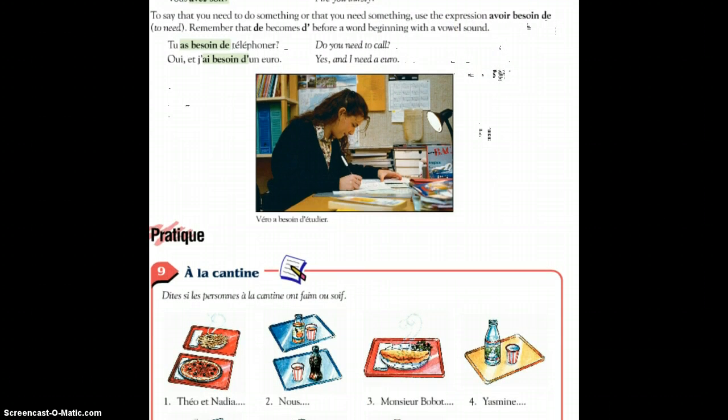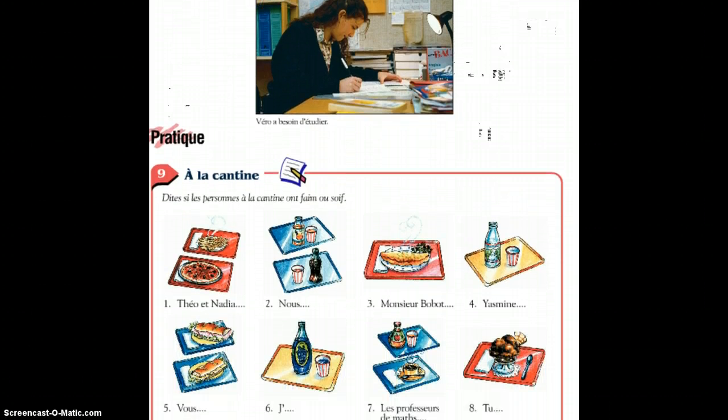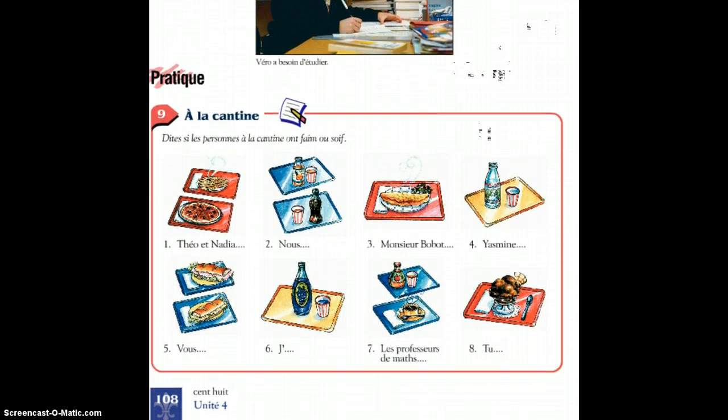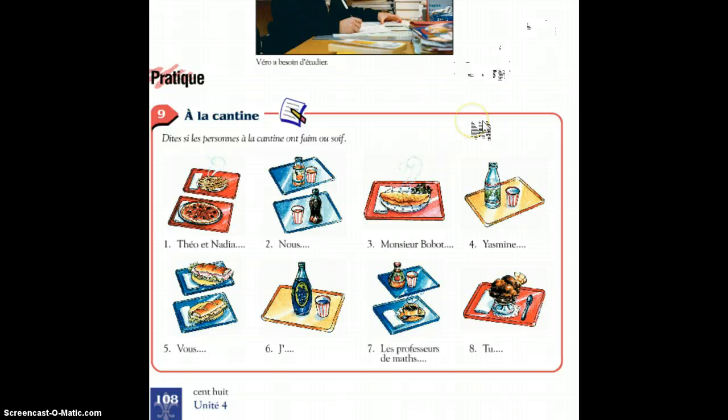Now let's try a few examples. Tell if these people are hungry or thirsty. Let's start with number one. Théo et Nadia ont faim. Number two.